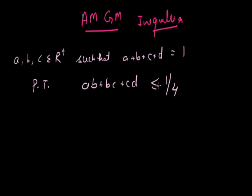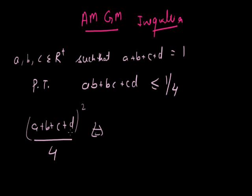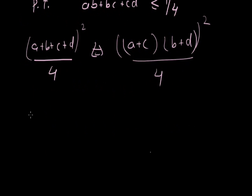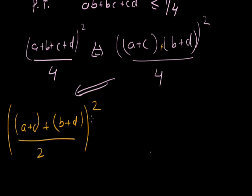The trick we use here: since A plus B plus C plus D equals 1, we can write 1 squared as 1. I can rearrange A plus B plus C plus D in the form (A plus C) and (B plus D), upon 4, squared. Rearranging again, this quantity becomes (A plus C plus B plus D) upon 2, squared. What I find here is (A plus C) and (B plus D) upon 2, which is the arithmetic mean of A plus C and B plus D.